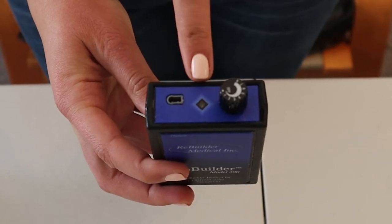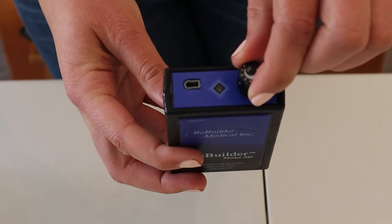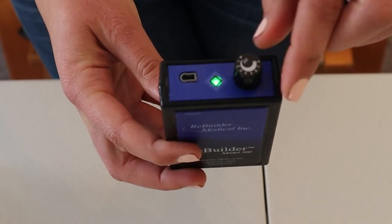This is the power indicator for the Rebuilder 300. Twist the power and intensity switch to turn on the Rebuilder 300.